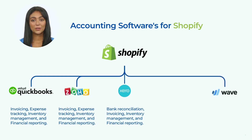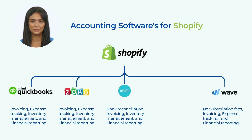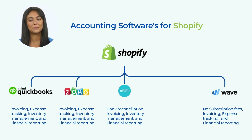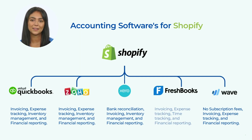4. Wave is a free accounting software that is ideal for small businesses. There are no subscription fees for using it — only transaction fees are charged. It offers features like invoicing, expense tracking, and financial reporting, and integrates with Shopify to automatically import orders and payment data. 5. FreshBooks is a cloud-based accounting software that offers features like invoicing, expense tracking, time tracking, and financial reporting. It integrates with Shopify to automatically import orders and customer data.